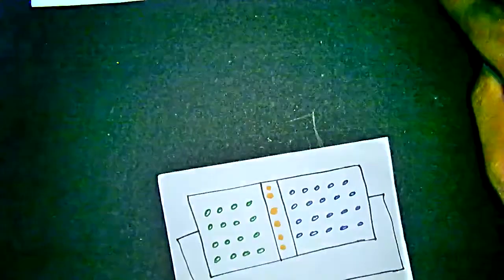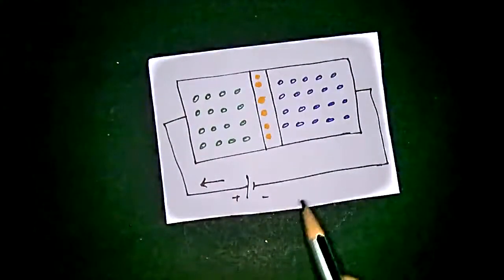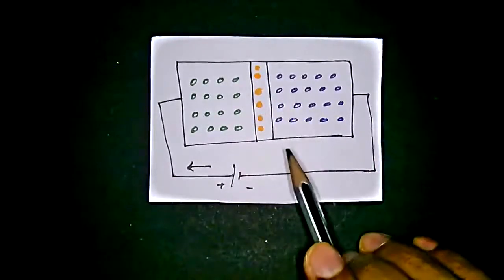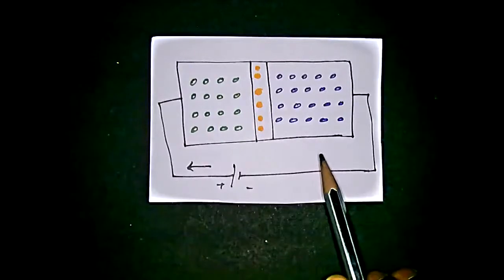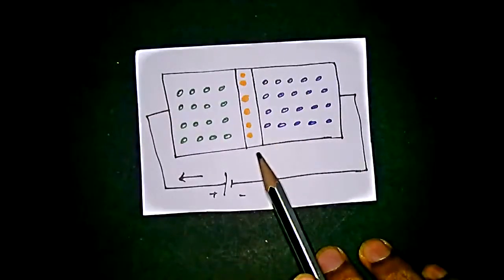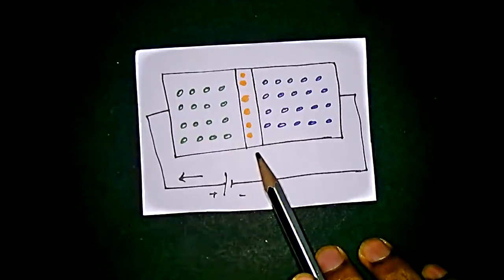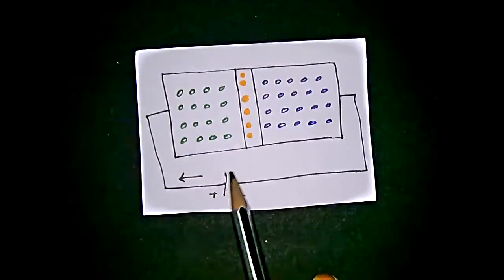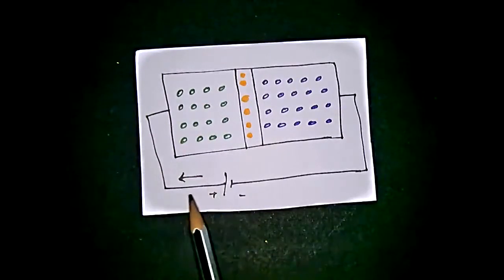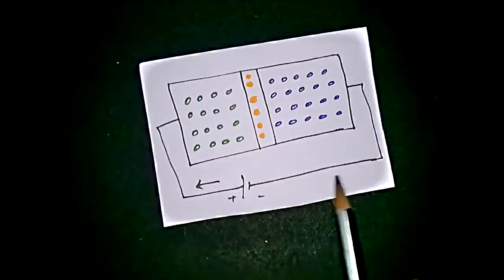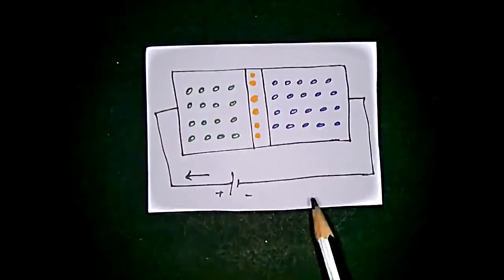So let's put the PN junction diode in a forward-biased configuration. Here, the green dots will refer to the P region, and violet will represent the N region. The barrier potential is denoted in the orange region. We have the forward-biased PN junction diode here. The conventional current flow will be in this direction, and the electron flow will be in the opposite direction.